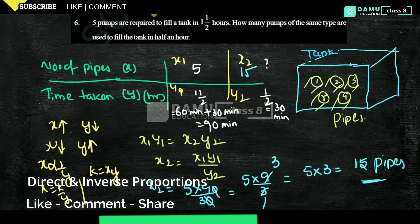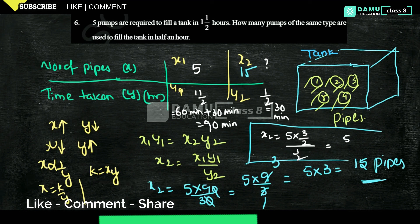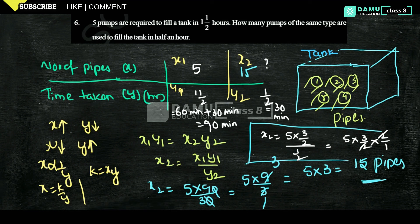Another method: X2 = 5 × Y1 / Y2. Y1 is one and a half hours, which is 3/2, and Y2 is half an hour, which is 1/2. So X2 = 5 × (3/2) ÷ (1/2) = 5 × (3/2) × (2/1). The 2s cancel, giving 5 × 3 = 15. Like this, you can also calculate it. Thanks for watching, please subscribe.